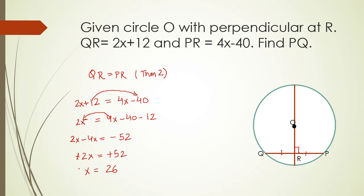Now this will not give us the answer that we are looking for. We have to put this value of x in QR and PR to find the length of PQ. How do we find PQ? PQ is nothing but the sum of QR and PR. 2x plus 12 plus 4x minus 40. Adding the like terms: 6x minus 28. Putting the value of x will be 6 times 26 minus 28, which will be 156 minus 28, which is 128. So this will be the answer for this question.